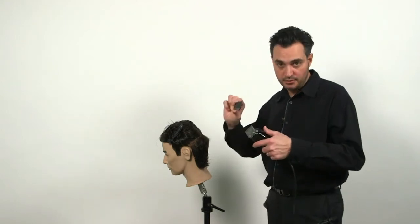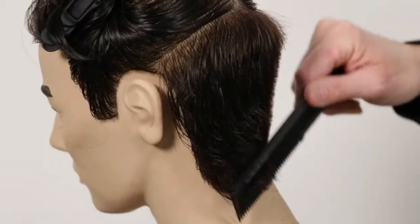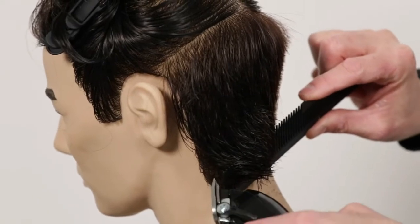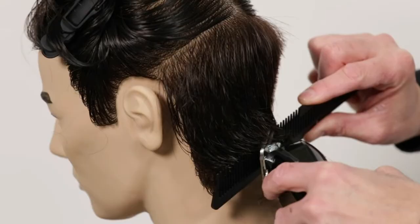The clipper's going to cut whatever you give it. So in this case, we're going to start to comb the hair down, lift up to put the comb in at 45 degrees, and you go with the clipper.